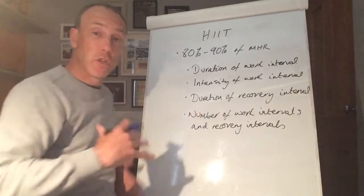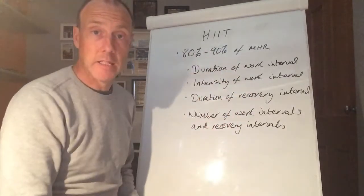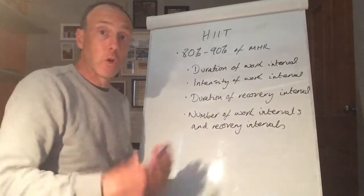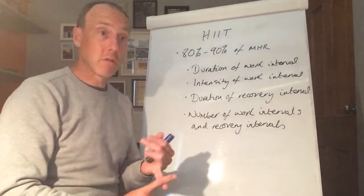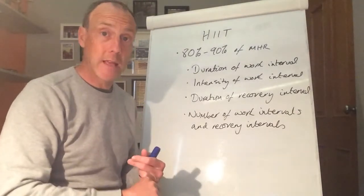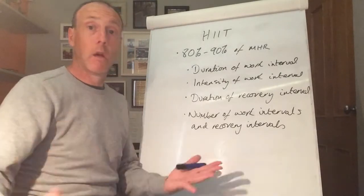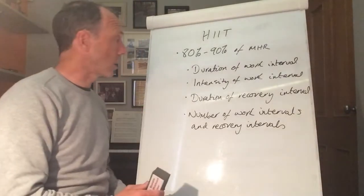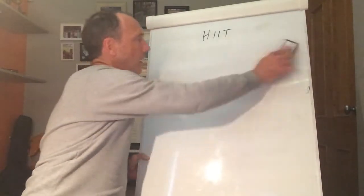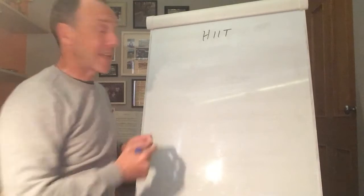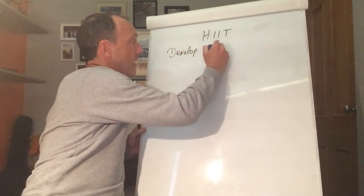Do not be lulled into thinking you're now telling me how it works — this is still what it is, answering the question of how it looks. As an example, it could be four 50-metre runs at three-quarter pace with 20 seconds rest. That covers everything. So that's the 'what'. Now, how it works: HIIT is actually seeking to develop the anaerobic system.